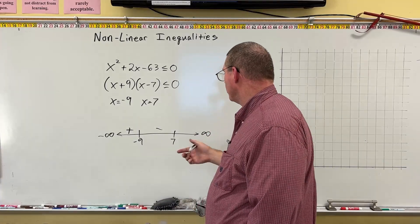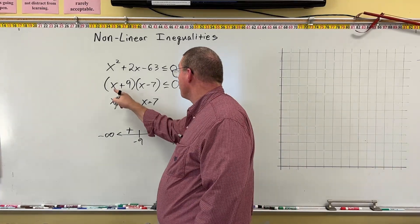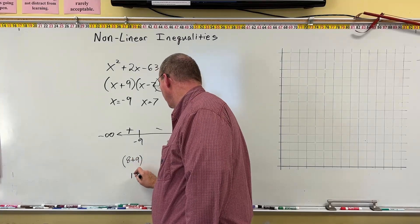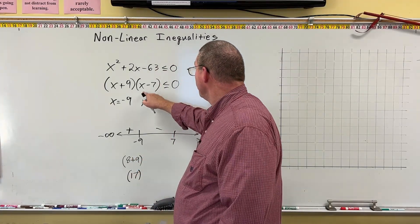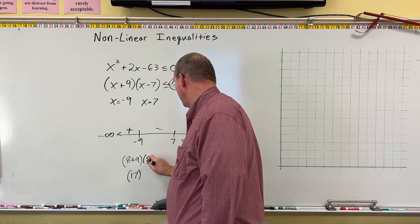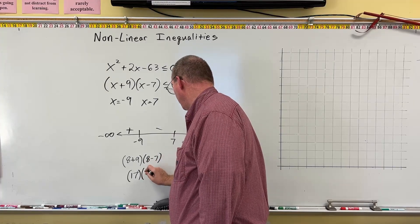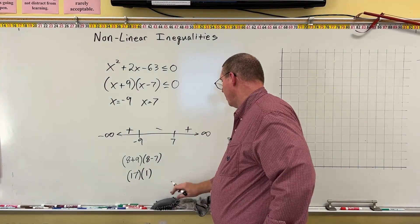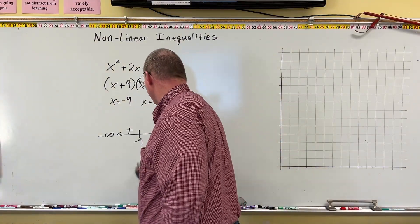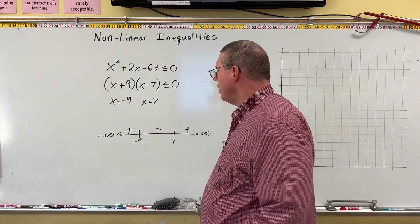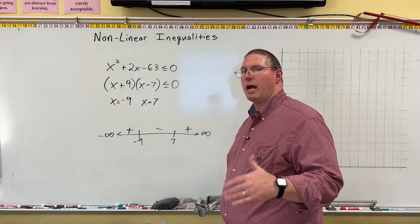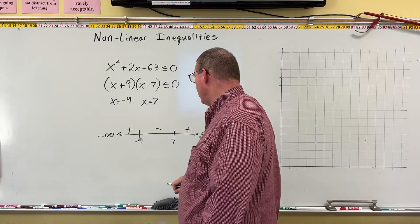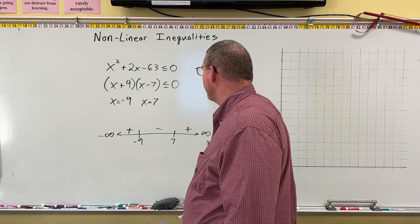And now we'll pick a number larger than 7, like 8. So we'll do 8 plus 9, that's 17. And then we'll do 8 minus 7, that's 1. And 17 times 1 is positive 17, so that's positive. And so these are our intervals. This is our sign chart. And you may want to watch this a few times to get used to seeing how the sign chart is thrown together. It is really pretty simple once you've done it several times.